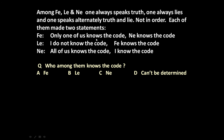Phi says: 'Only one of us knows the code' and 'Ni knows the code.' Li says: 'I do not know the code' and 'Phi knows the code.' Ni says: 'All of us know the code' and 'I know the code.' Based on these statements, the question is: who among them knows the code — Phi, Li, Ni, or cannot be determined?